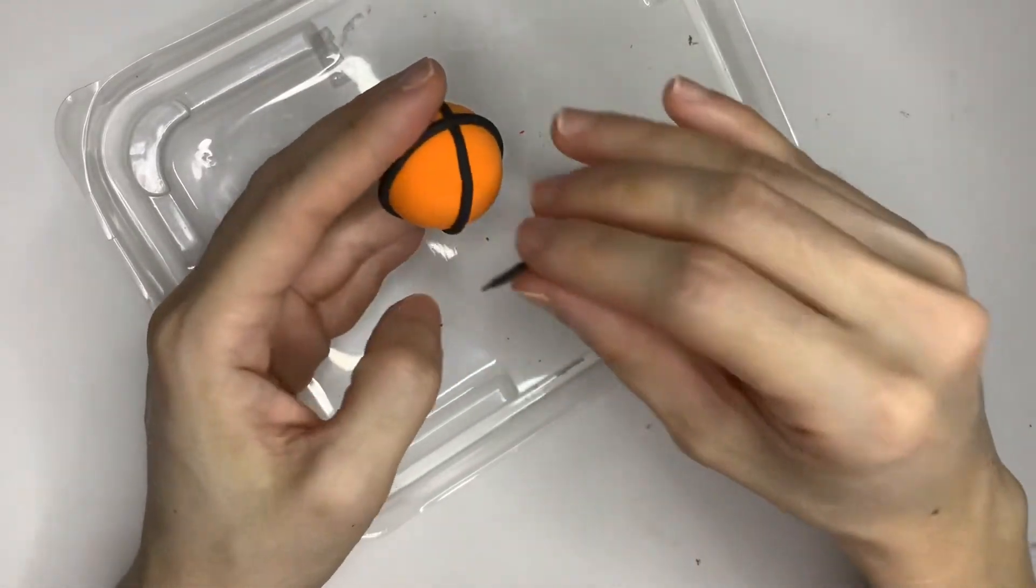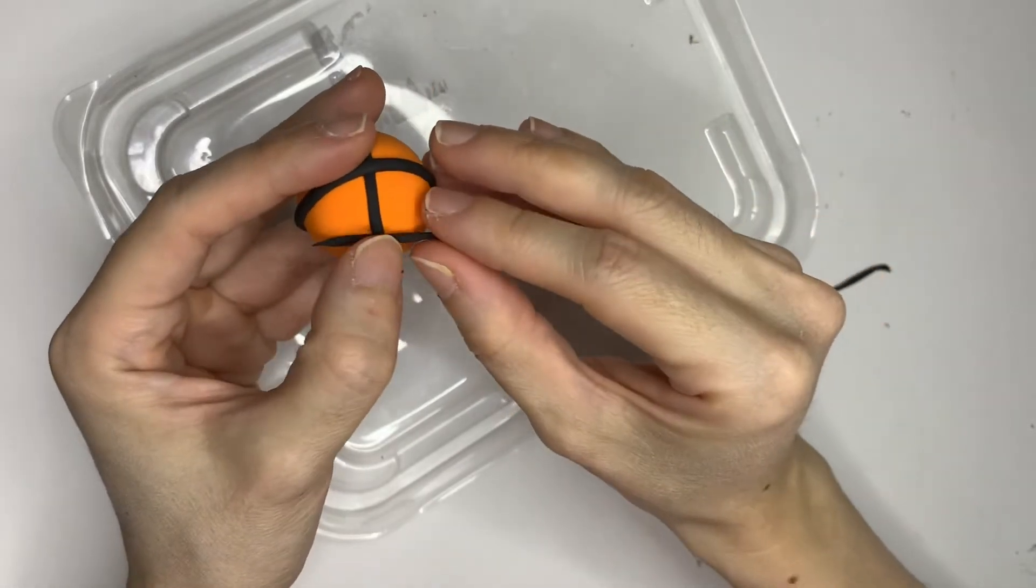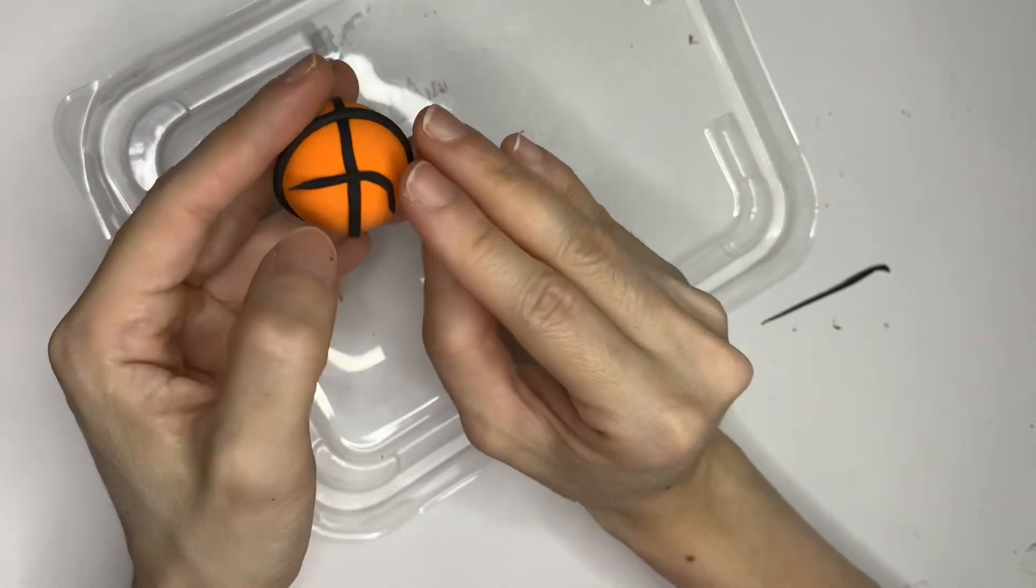Now here comes the more tricky part. We need to make two capital C shapes on each side of the ball.